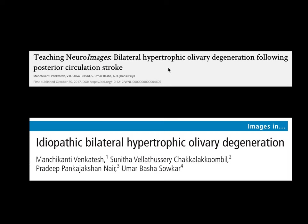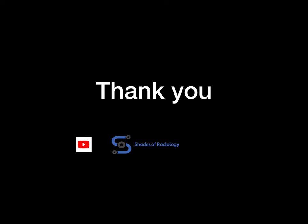I have published two cases of hypertrophic olivary degeneration. One was an idiopathic case with no identifiable cause or lesion within the Guillain-Mollaret triangle, which is very rare. The other case was a posterior circulation stroke, similar to the case presented in this video, which I had published 2 to 3 years back. Thank you very much.